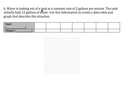In Part B, I'm told water is leaking out of a tank at a constant rate of 2 gallons per minute. The tank initially held 12 gallons of water. Use this information to create a data table and graph that describe this situation.